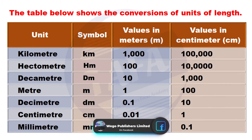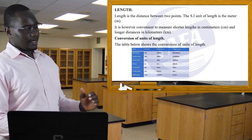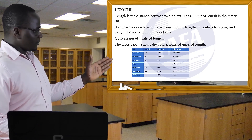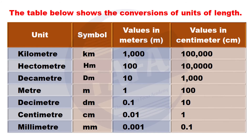We have kilometers, which is equivalent to 1,000 meters or 100,000 centimeters. Hectometer, with the symbol HM, has a value of 100 meters and an equivalent of 10,000 centimeters. The table continues all the way to the millimeter, which is equivalent to 0.001 meters and 0.1 centimeters.